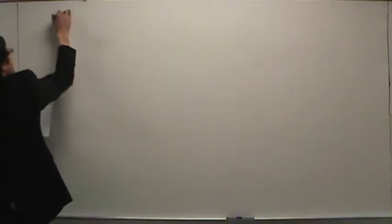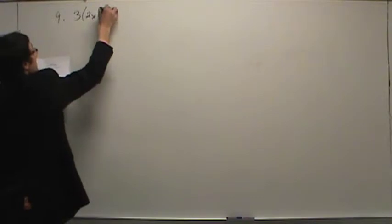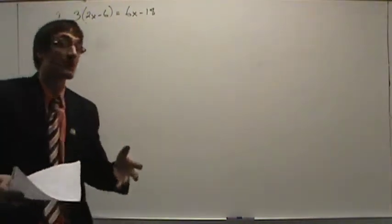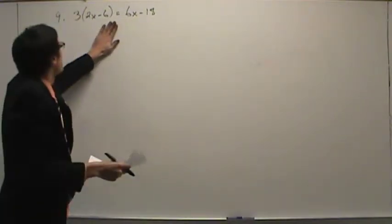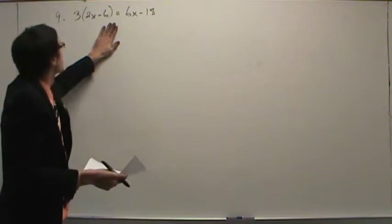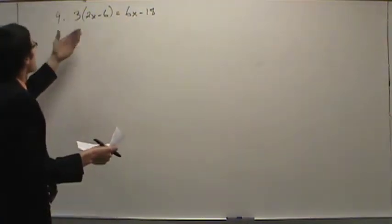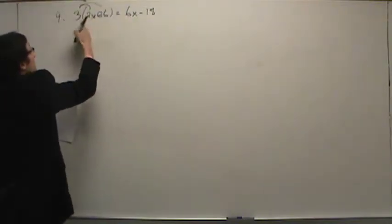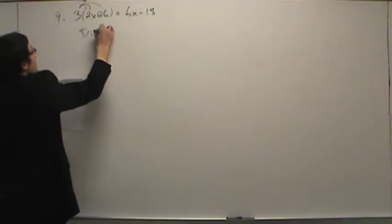So the practice quiz, number nine said: three times the quantity two x minus six is equal to six x minus eighteen. Parentheses give a clue that you're looking at either the distributive property or the associative property. Here, multiplication meets addition — three times two is six, three times six is eighteen. This is an example of the distributive property.